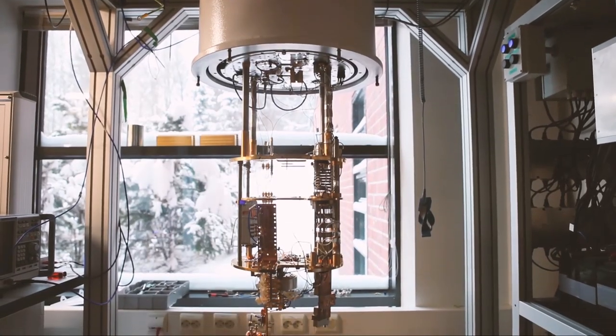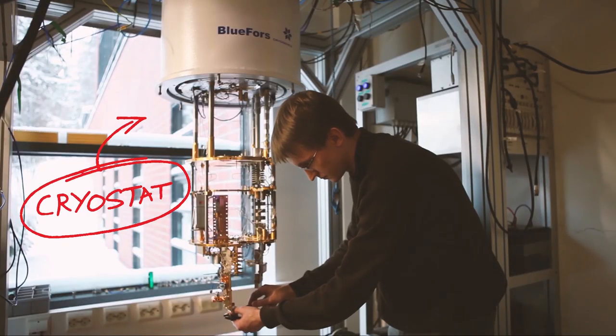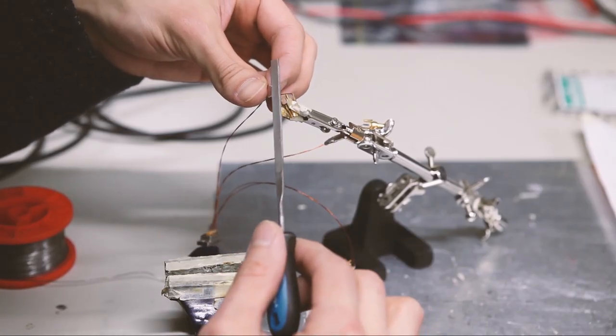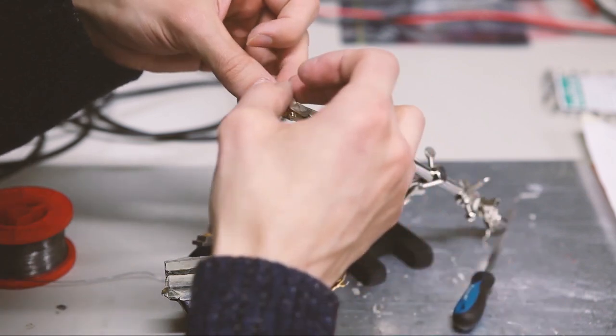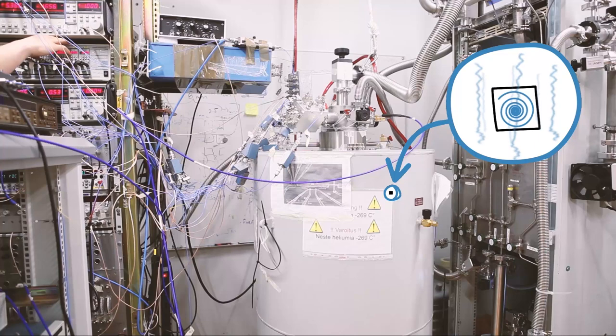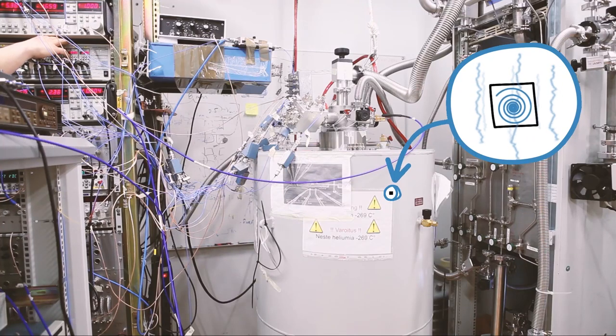The cryostat is basically just a very sophisticated fridge, a super refrigerator. It cools down from room temperature to temperatures which are just one tenth of a degree from almost absolute zero. We need cryostats because we have to cool these chips down to very low temperatures.